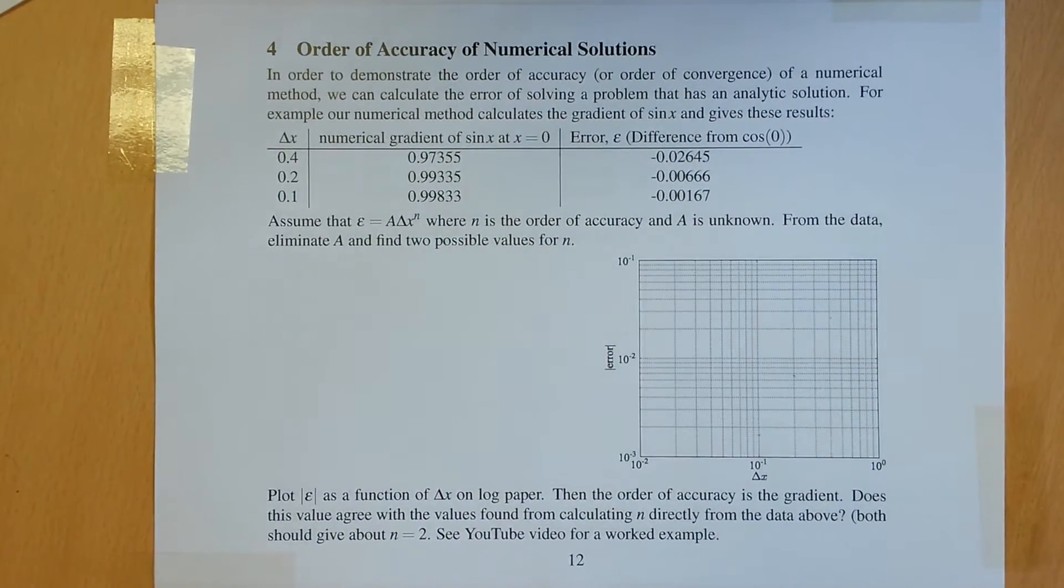We've worked out from numerical analysis that the order of accuracy n should be 2. Have we coded it properly? Have we done the analysis properly? Is it really second order accurate?